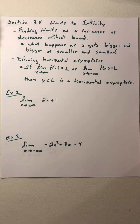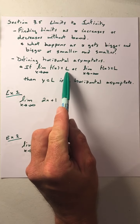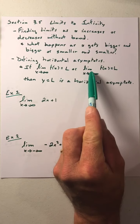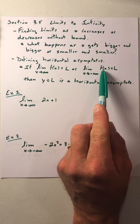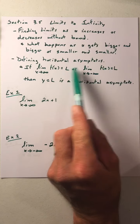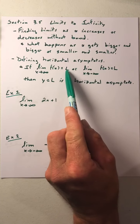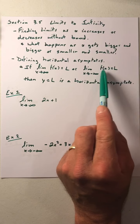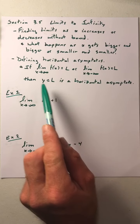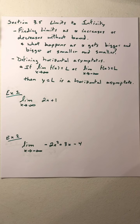If we find that the limit as x goes to infinity of f(x) equals some value L, or if the limit as x goes to negative infinity of f(x) equals some L — again, these don't have to be the same value, but they could be — if we find that they go to some value, then that's going to define a horizontal asymptote. We've defined vertical asymptotes where infinity is the value as we take the limit. Now if we take the limit going to infinity, it gives us our horizontal asymptotes.